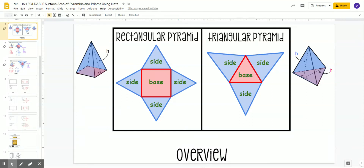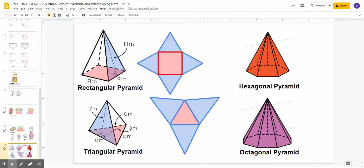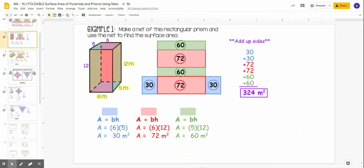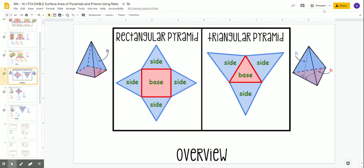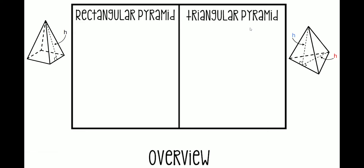Hey guys, this is part three of three in our video series about finding surface area of prisms and pyramids. In part one, we learned how to tell the difference between a prism and a pyramid. In part two, we learned how to find the surface area of triangular and rectangular prisms. And in this third and final part, we are going to learn how to find the surface area of rectangular pyramids and triangular pyramids using our nets method. Let's begin.